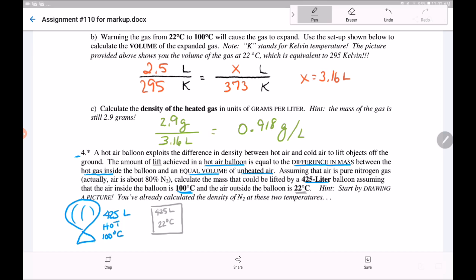And we're trying to find the difference in mass. What's the mass of the air in the balloon? What's the mass of the air in the unheated box? Let's use density. It says you've already calculated the density at these two temperatures. Let's try the hot.